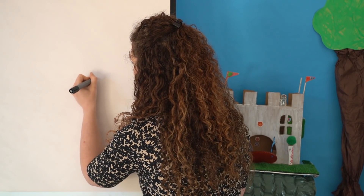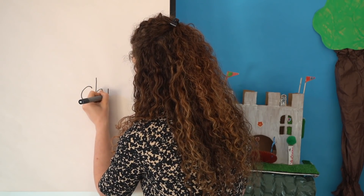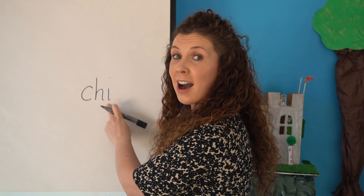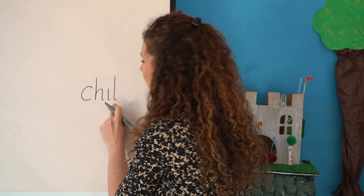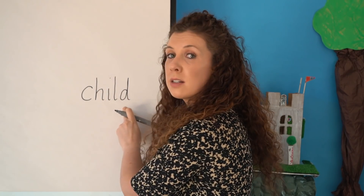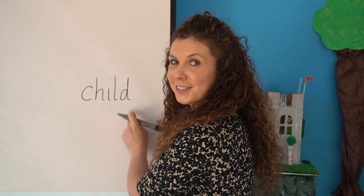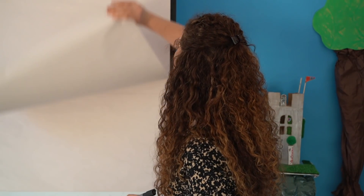CH — our new grapheme — I, L, D. CH-I-L-D. Child. Let's hide the word. Okay, now you have a go. Say the word. Say the sounds: CH, I, L, D. Write them down. Don't forget the digraph and our new grapheme.